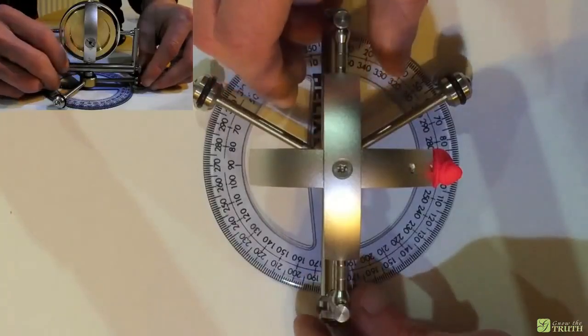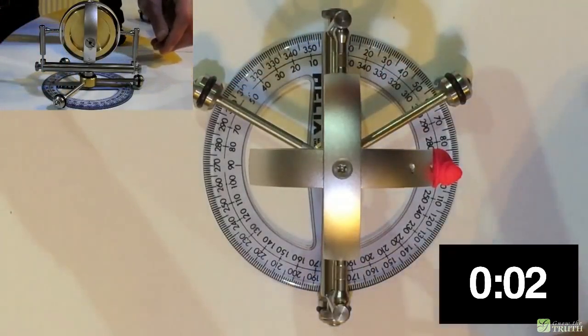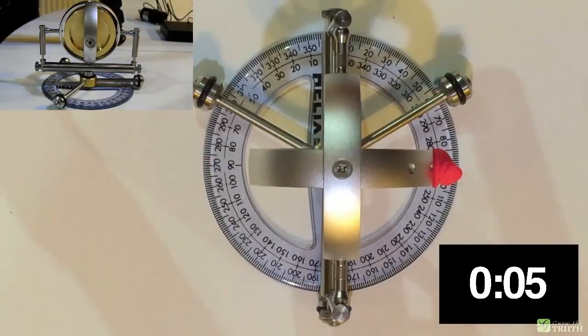In reality, whenever any attempts are made at measuring any detectable shift in bearing they fail, as any well-calibrated gyroscope will always faithfully point forever in the same direction.